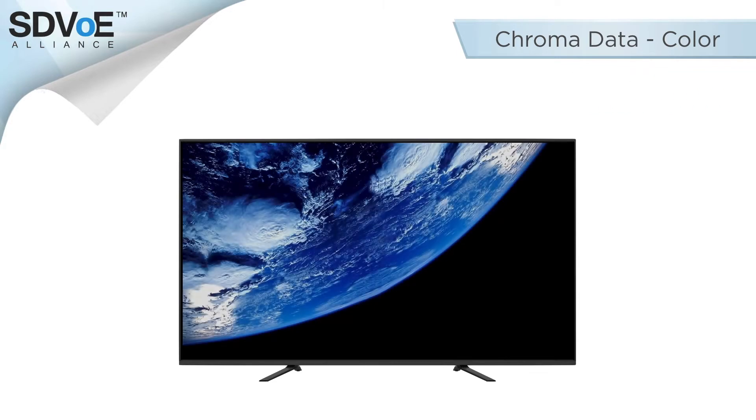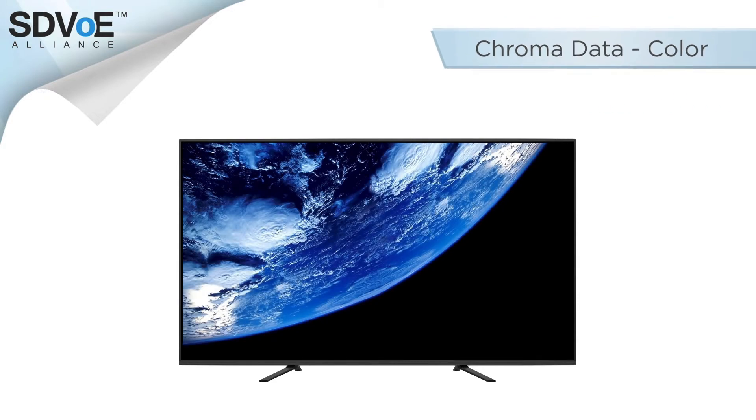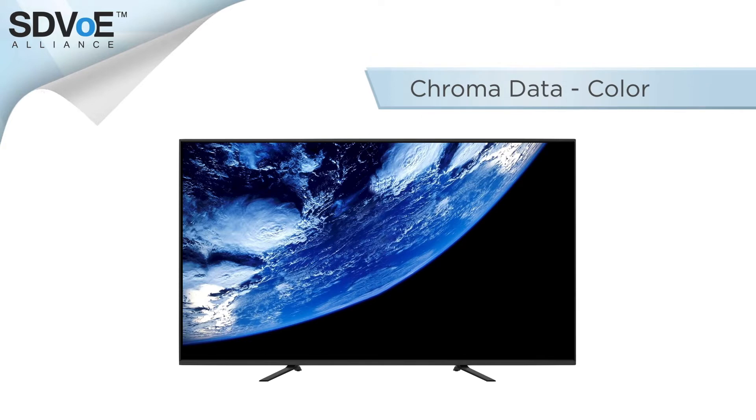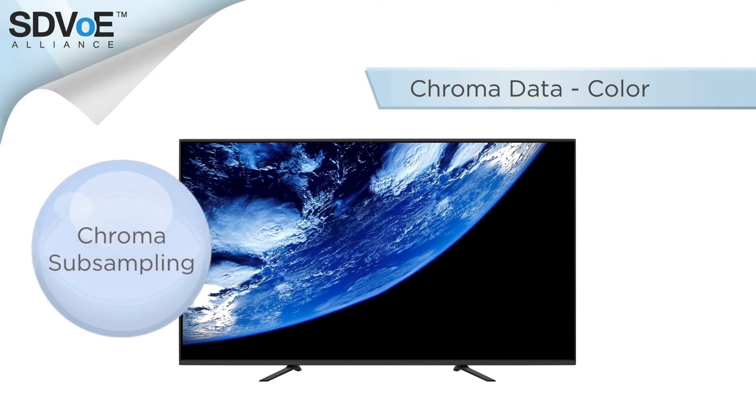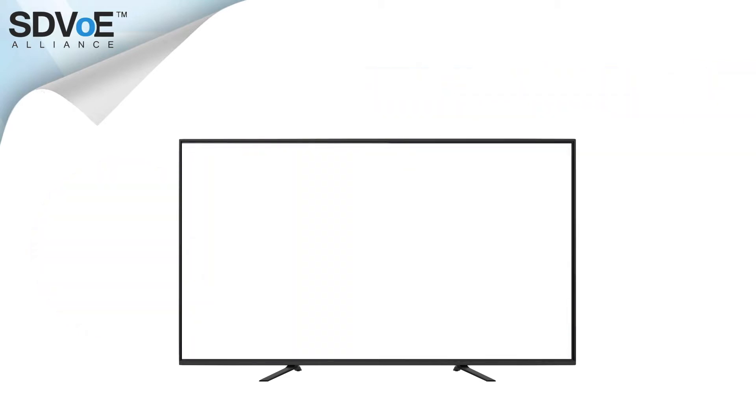However, we can do some clever work with the chroma of an image to save ourselves some bandwidth and yet still maintain a pretty clear image. We call this chroma subsampling. So, what exactly is chroma subsampling?